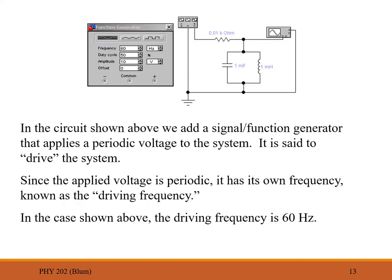The LC circuit has periodic behavior, but now we add another frequency. We introduce a function generator and a small resistance to make the circuit realistic, with an oscilloscope across the capacitor. The function generator produces a sine wave with its own frequency — the driving frequency — which typically differs from the LC circuit's natural frequency. Here it is set to 60 hertz.